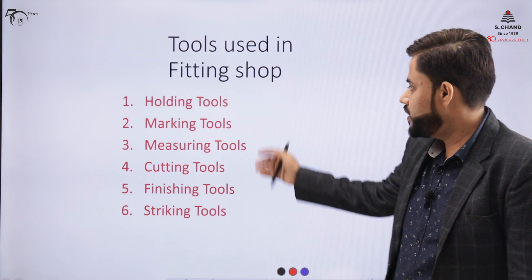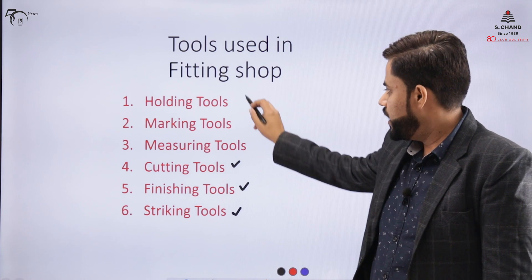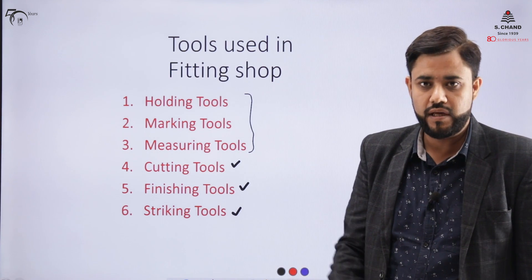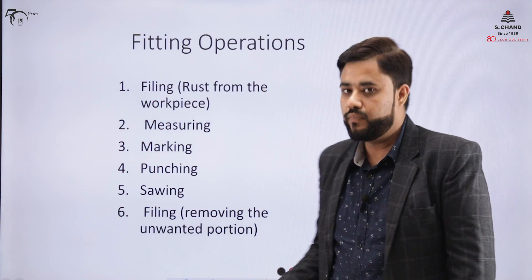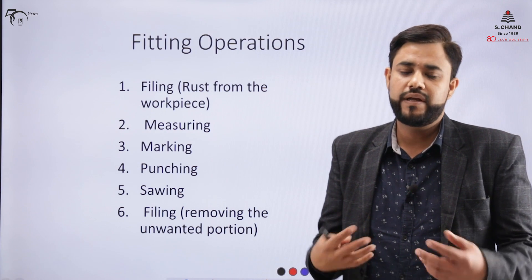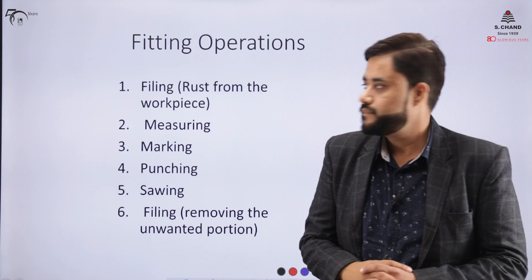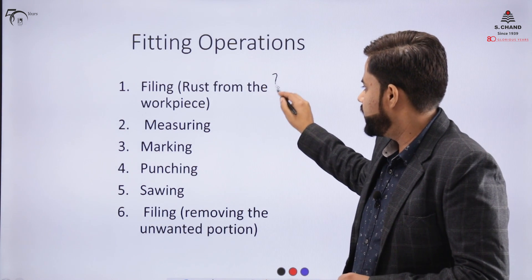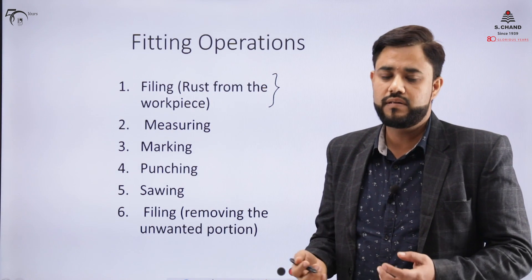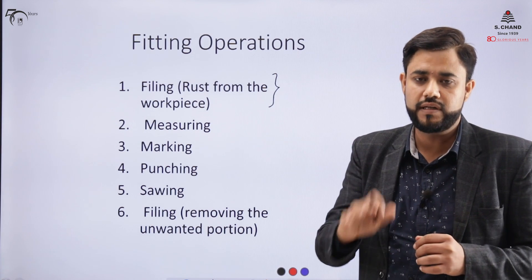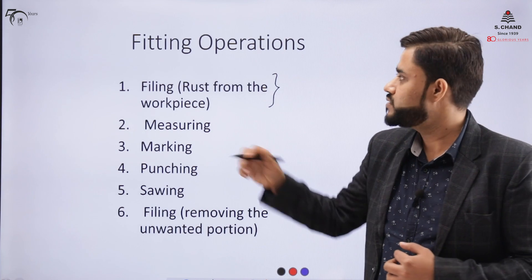These are the tools discussed in this video: cutting tools, finishing tools, and striking tools. The tools discussed in the first part of the video were the other three categories. Additionally, we need to look at the fitting operations performed in the fitting shop. The first operation is filing — for example, if there is rust on the surface of the workpiece, we perform a filing operation to remove it.